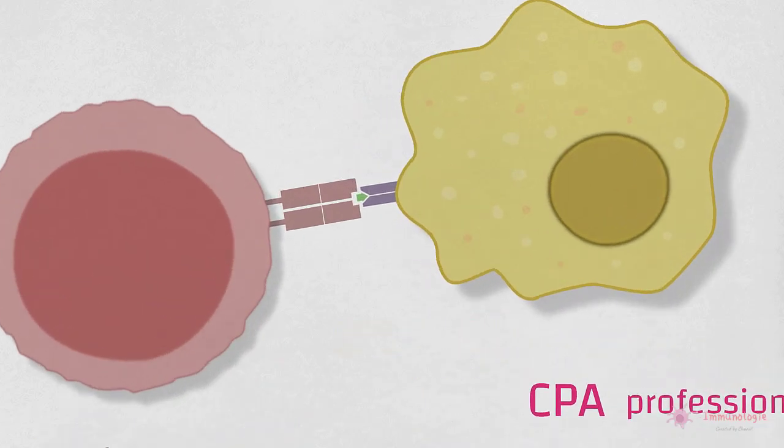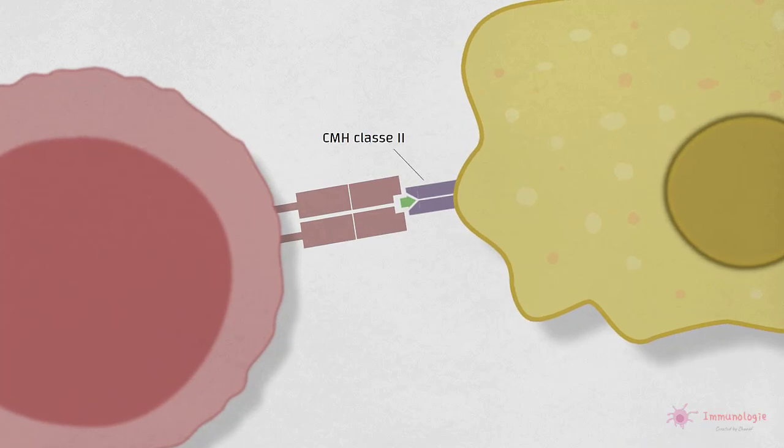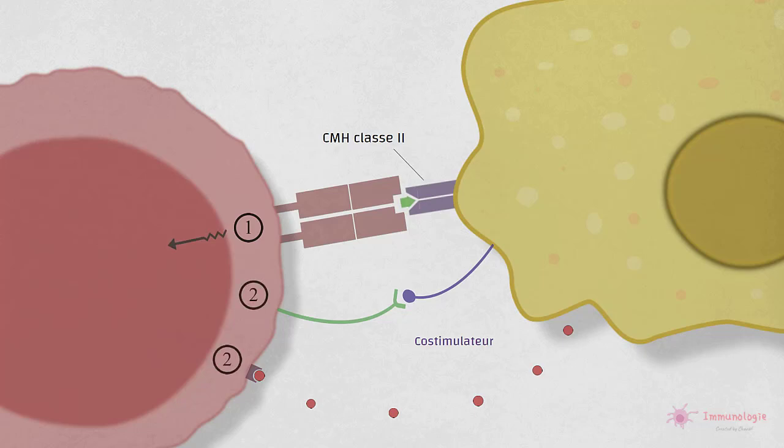Les cellules dendritiques, les macrophages et les lymphocytes B expriment des molécules de CMH de classe 2 et d'autres molécules impliquées dans la stimulation des cellules T, appelées molécules de costimulation ou costimulateurs. Les CPA sécrètent également des cytokines qui jouent un rôle essentiel dans la différenciation des T naïves en cellules effectrices. L'antigène est le premier signal et ces stimuli supplémentaires sont parfois appelés second signal.